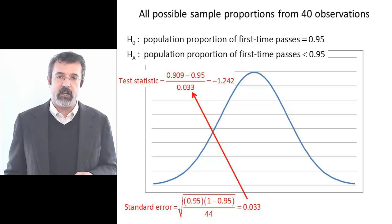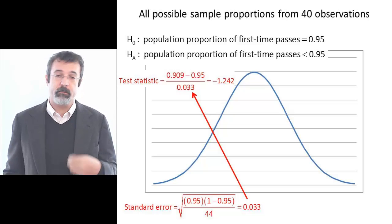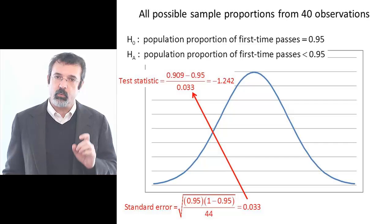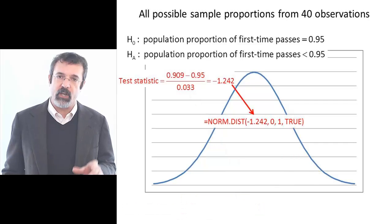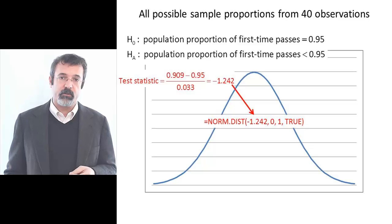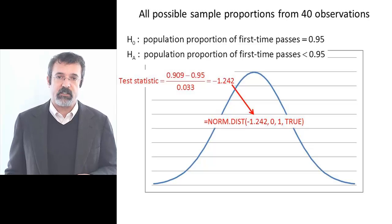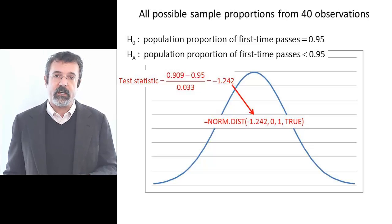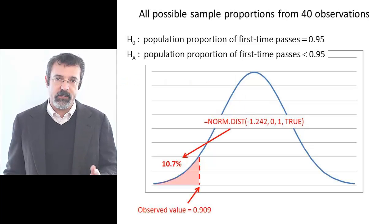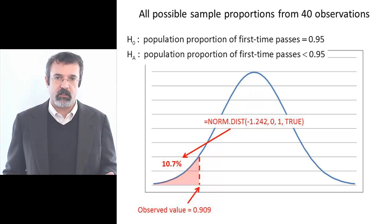If we have enough observations, we can take sample proportions to be normally distributed. So to find the p-value, we use the NORM.DIST function. The NORM.DIST function takes four arguments: the first is our test statistic, negative 1.242, and the next three are 0, 1, and true. The NORM.DIST function returns the area to the left of the test statistic — in this case, 10.7%.